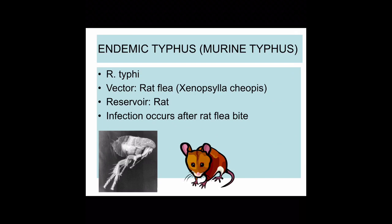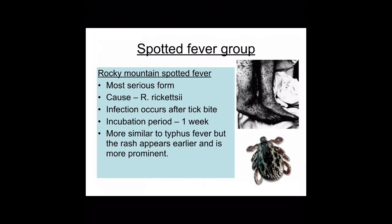Endemic typhus, also known as murine typhus, is caused by Rickettsia typhi, with the vector being a rat flea. The infection occurs after a bite by a rat flea, and the reservoir is the rat. As for the spotted fever group, Rocky Mountain spotted fever is the most severe form of all spotted fevers, caused by Rickettsia rickettsii. Infection occurs after a tick bite, with an incubation period of only one week.